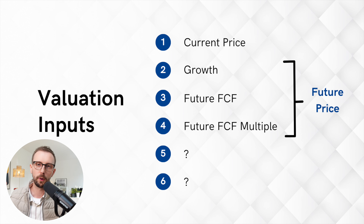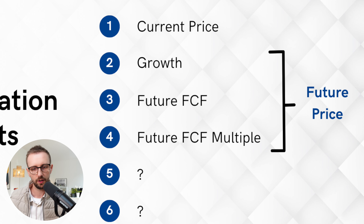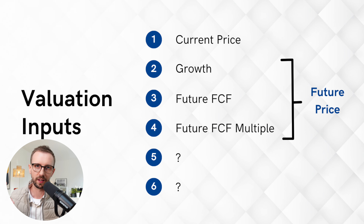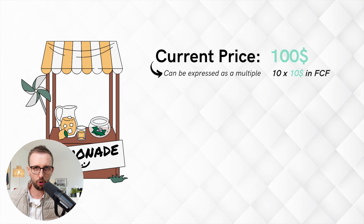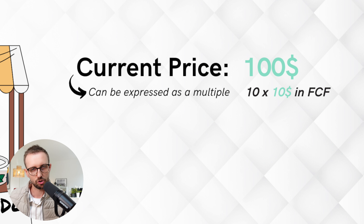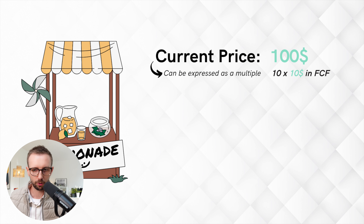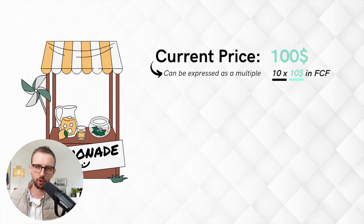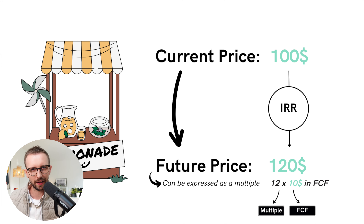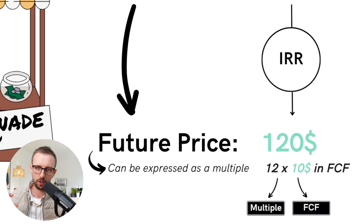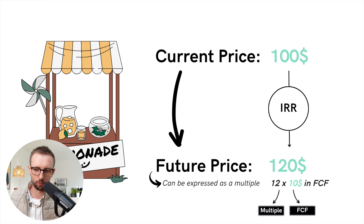The next three inputs are all related to the possible future price of our lemonade stand: growth, future free cash flow, and the future free cash flow multiple that the lemonade stand will trade at. The current price of $100 can be expressed by a free cash flow multiple — if the stand produces $10 in free cash flow and we multiply that by a valuation multiple of 10, we arrive at $100. Similarly, the future price of $120 can be expressed by a multiple; if free cash flow stays the same, the multiple would have to expand to 12.